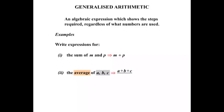Then we divide by the number of scores we have. In this case we have three scores. So we divide by three. So there we have it. The average of A, B and C is A plus B plus C, all divided by three.